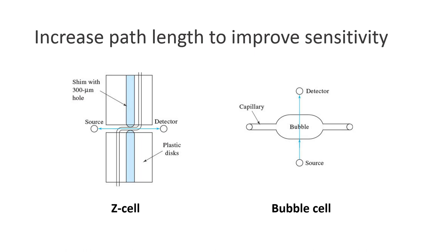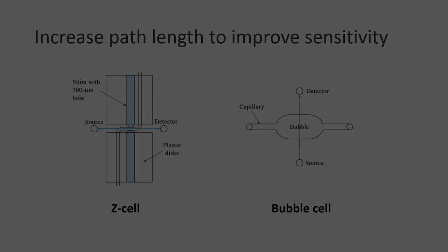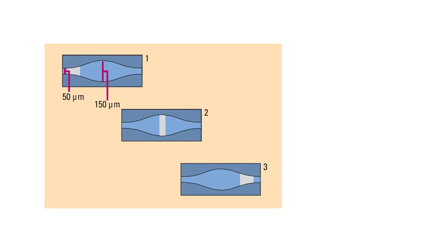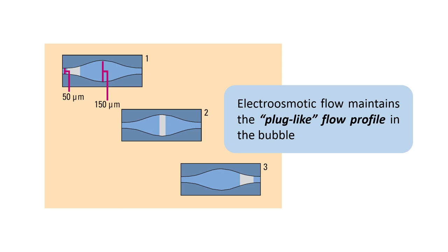Another approach is to use a bubble cell, which can improve the sensitivity by 3 to 5 times as compared to standard capillary. If the bubble cell is well designed, the electroosmotic flow is able to maintain the flat flow profile in the bubble so that the resolution would not be compromised.